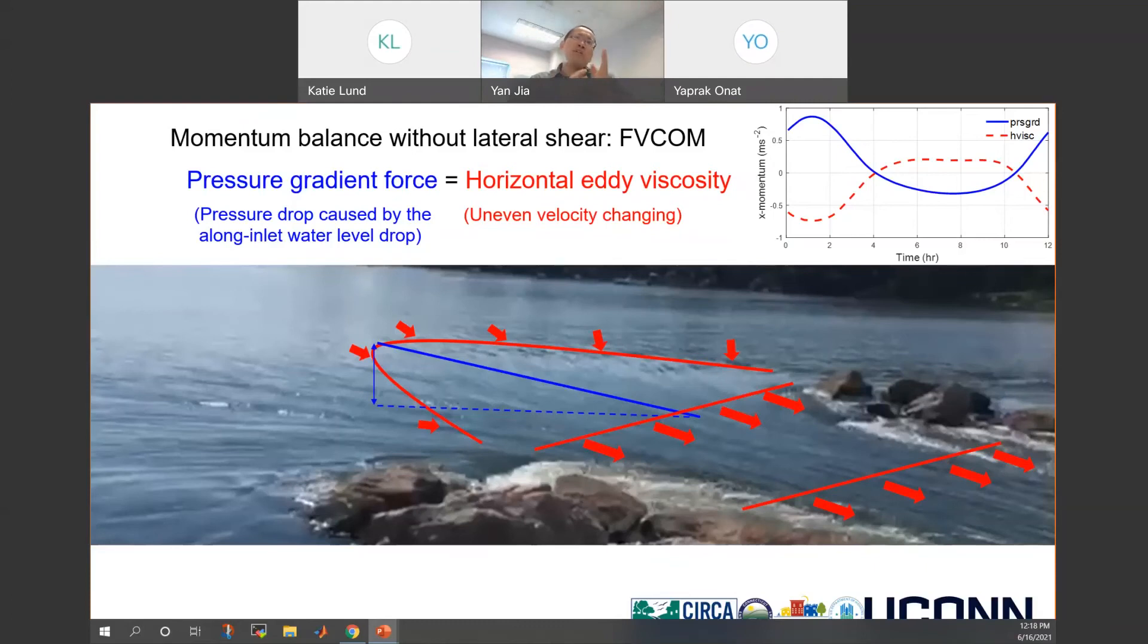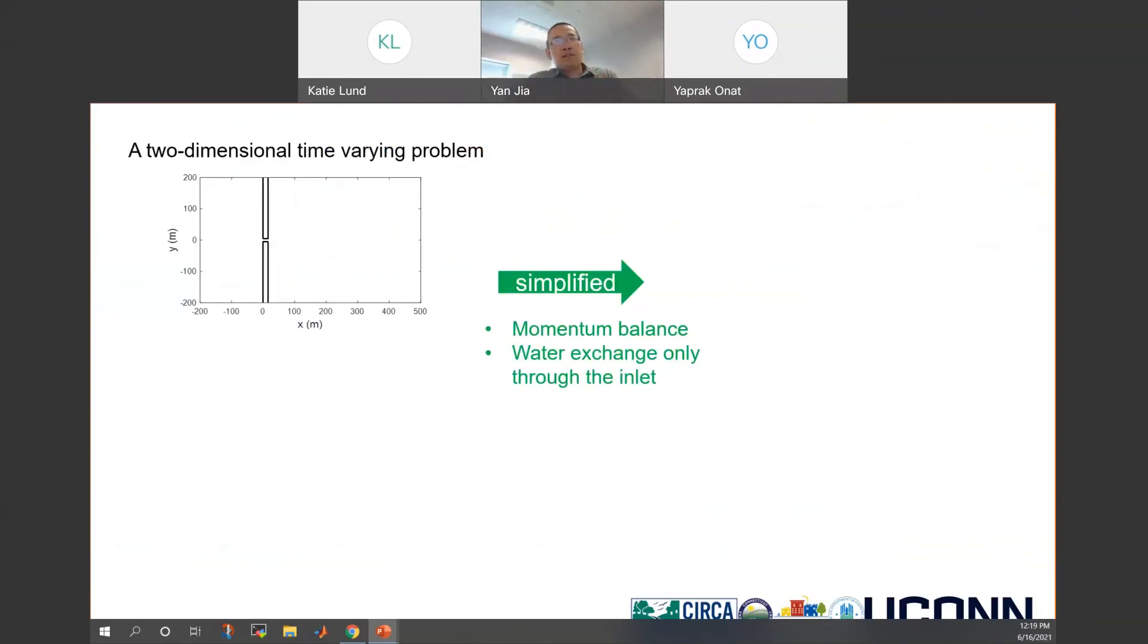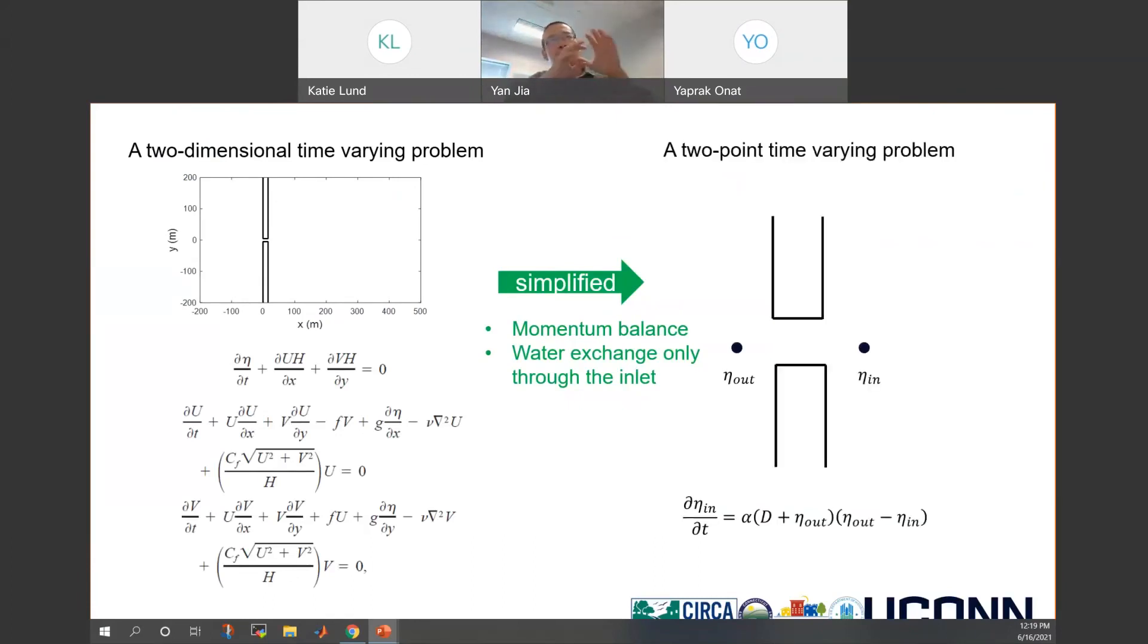For both scenarios, with or without lateral shear, the momentum balance is between pressure gradient force and horizontal eddy viscosity. You may ask why we care so much about this momentum analysis. With the momentum analysis, we can simplify the models. Like all the full models I'm showing, they all are two dimensional time-varying problems. You need to use a supercomputer to run one to two hours to get those results. You're running a testing case with a group of three equations. But once we know the knowledge of momentum balance based on this numerical simulation, we can simplify this two dimensional problem to a two point time-varying problem. We simplify the equations to only one, and we can finish a simulation in less than 30 seconds on my own laptop.